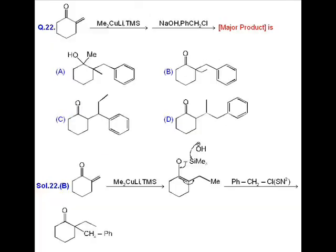So answer should be C. Question number 22, it is a conjugated ketone cyclic compound which is treated with lithium dimethyl cuprate in presence of trimethyl silyl chloride. So it is the reaction in which 1,4 addition is conducted and the enolate anion is protected by trimethyl silyl chloride.